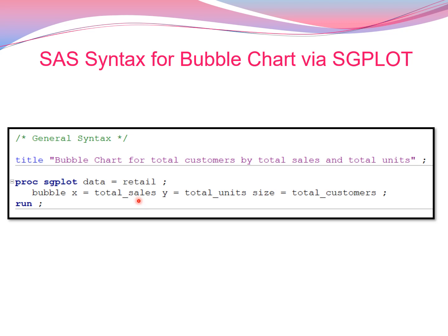I'll be using data equal to retail, which is the retail data example. The bubble statement has x as total sales, y axis as total units, and the size of the bubble is total customers.